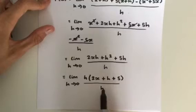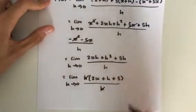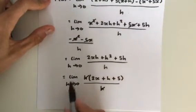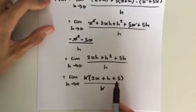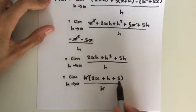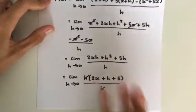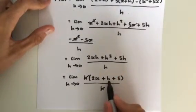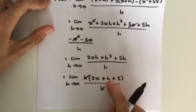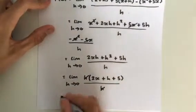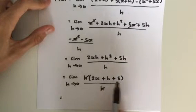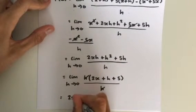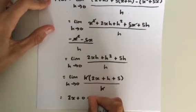The h's now cancel. And what we're left with is the limit as h approaches 0 of 2x plus h plus 5. So 2x and 5 stay normal. They've got no h next to them. But h, as it becomes 0, h becomes 0. So it's pretty simple.